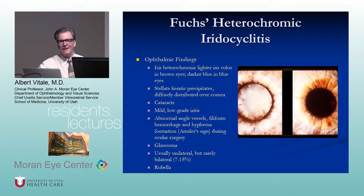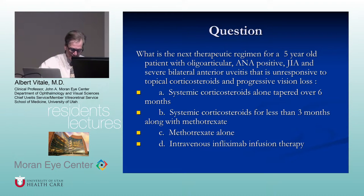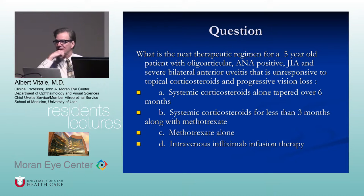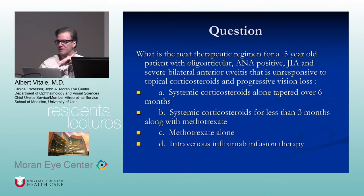Regarding cataract surgery with intraocular lens implantation, it's not a no-brainer to put a lens in a uveitic eye. However, the diagnosis associated with the best prognosis for tolerating an intraocular lens is Fuchs heterochromic iridocyclitis.